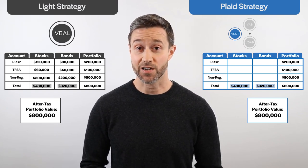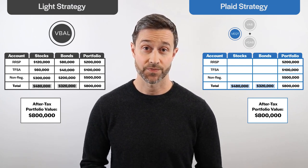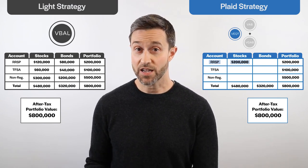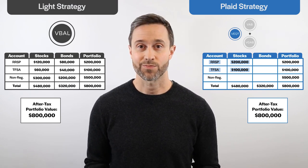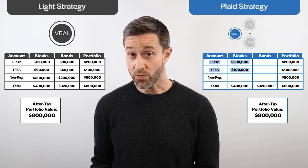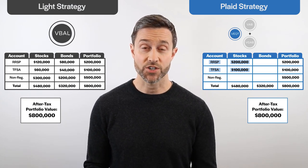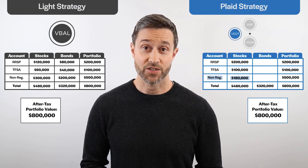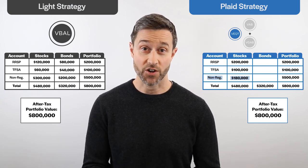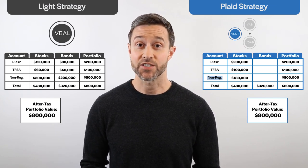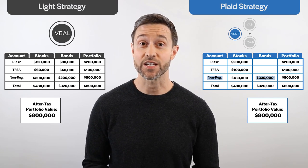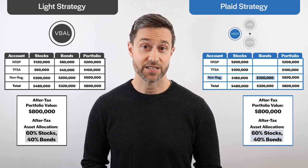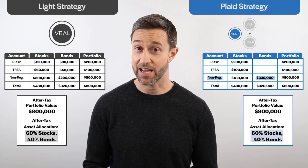For the plaid asset location strategy, we'll start by allocating $200,000 of stocks to the RRSP first, and $100,000 to our TFSA next. Practically speaking, the RRSP is actually worth $400,000 before tax, so this is the amount of VEQT we'll purchase in the RRSP. After allocating a total of $300,000 to stocks, we still need another $180,000 in stocks, so we'll purchase this amount in our non-registered account. The last thing to do is to purchase the entire bond allocation of $320,000 in our non-registered account. We've now created a 60% stock, 40% bond after-tax asset allocation for both our light and plaid strategies.